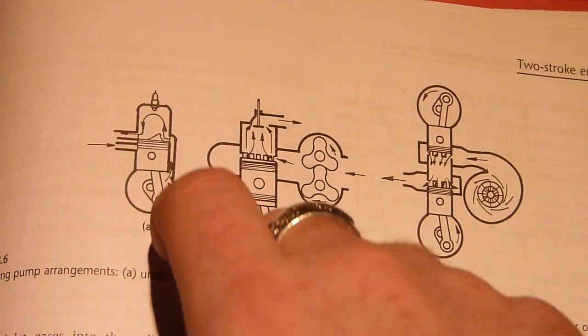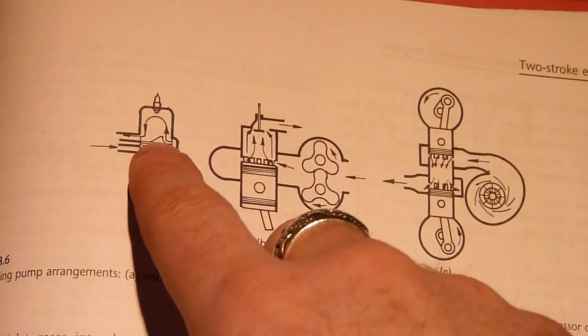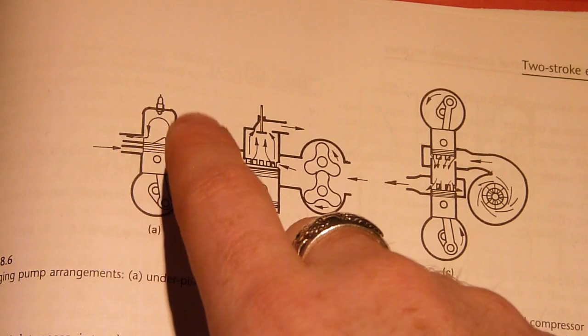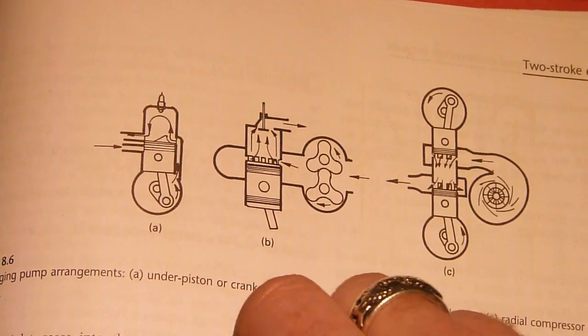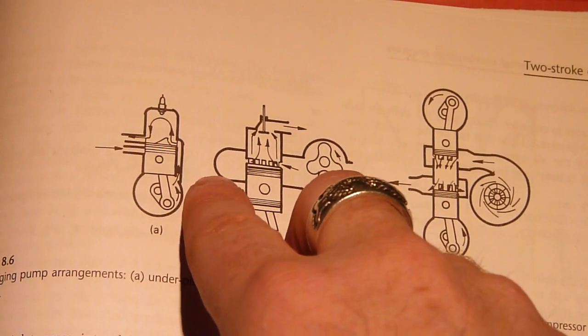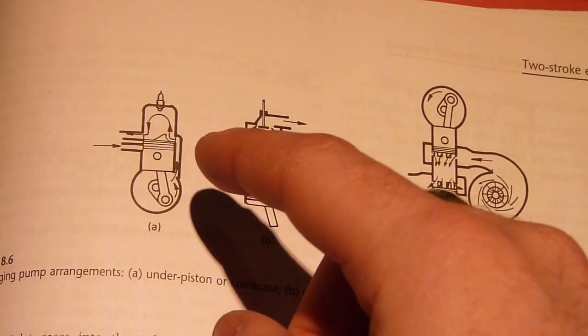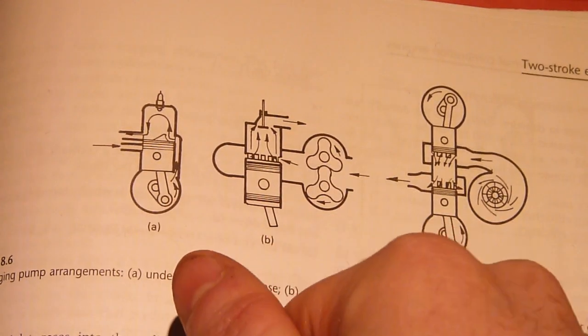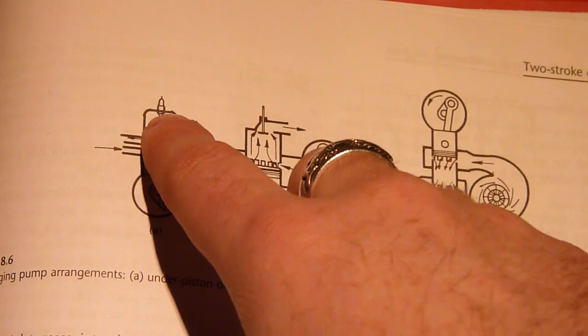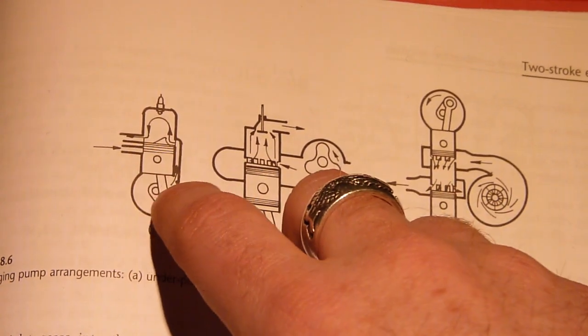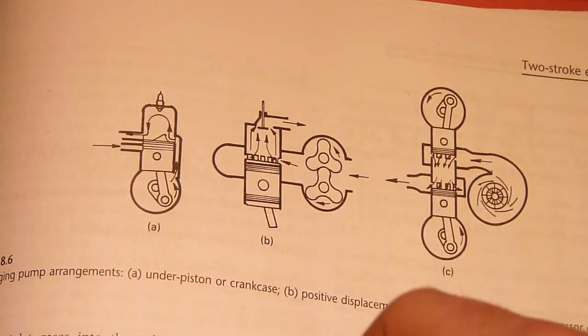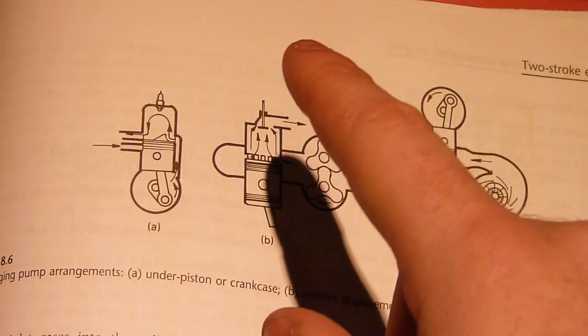Now in a traditional crankcase induction system, it uses the crankcase as the compressor and the piston. So basically you'll have a valve on the intake which stops any of the pressurized fuel-air mixture going back out the intake. As the piston goes down, the fuel-air mixture starts to pressurize, which is normally around about 1.2 to 1.8 bar.